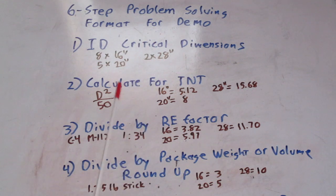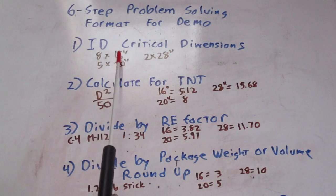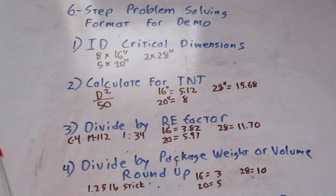Now, we need to calculate for TNT for each of those different types of trees. The calculation for abatis is D squared over 50, the diameter squared over 50. For the 16 inch trees, we need approximately 5.12 pounds per tree. For the 20 inch trees, we need approximately 8 pounds. For the 28 inch trees, we need 15.68 pounds of TNT.